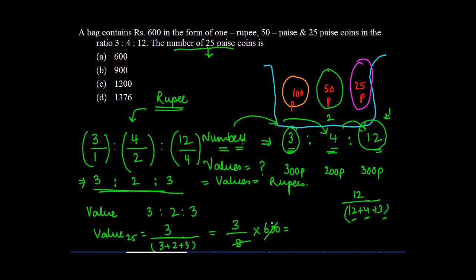3 by 8 into 600. This goes to knock off 75. 3 times 75 gives you 225. So the value of 25 paise coin is 225.